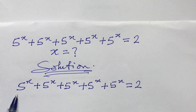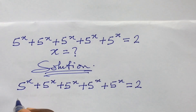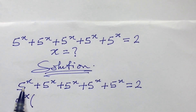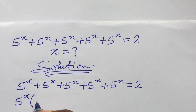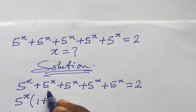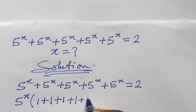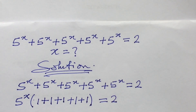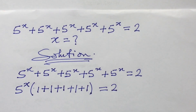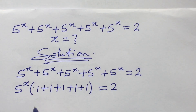We discover that all the terms here are the same, so the best thing to do is to factor out 5 to the power of x. Doing so gives us 5^x times the bracket (1 + 1 + 1 + 1 + 1), where each 5^x divided by 5^x equals 1. Adding these gives us 5 inside the bracket, so we end up with 5^x times 5 equal to 2.